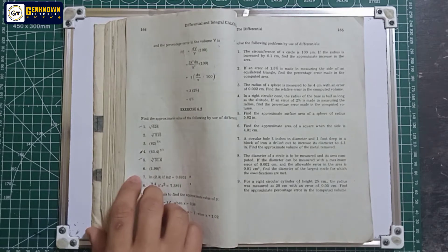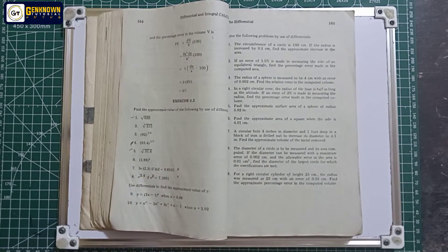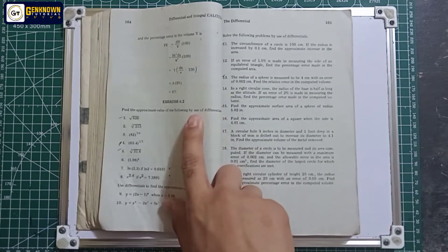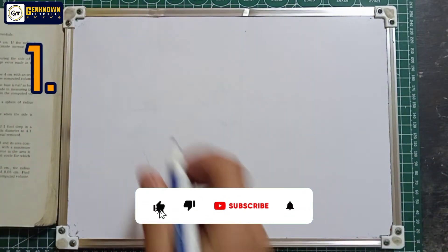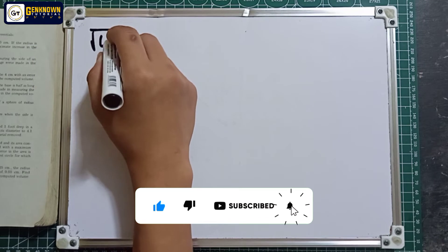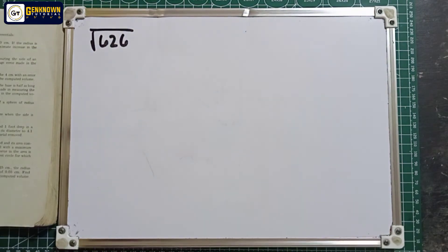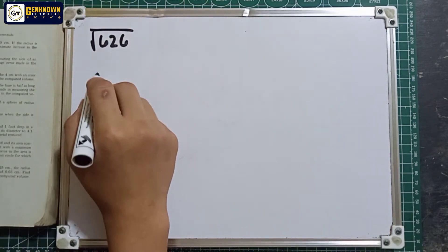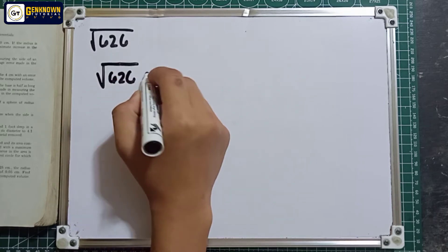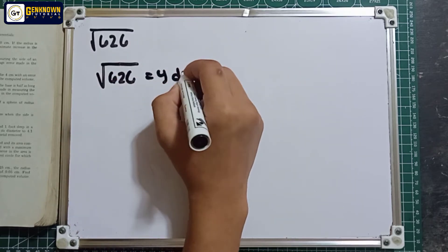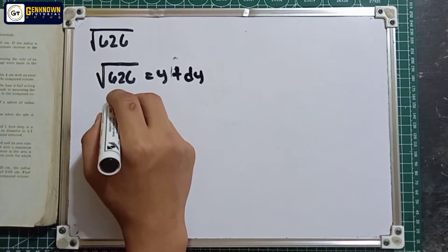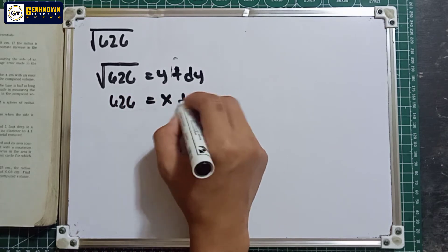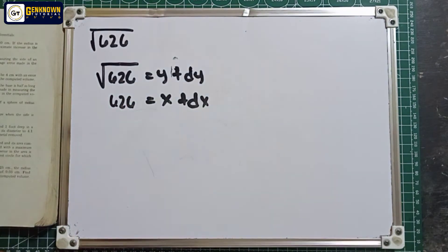This is Exercise 6.2. The instruction here is: find the approximate value of the following by the use of differentials. Number one: square root of 626. Let the square root of 626 be approximately equal to y plus dy, and 626 is equal to x plus dx.